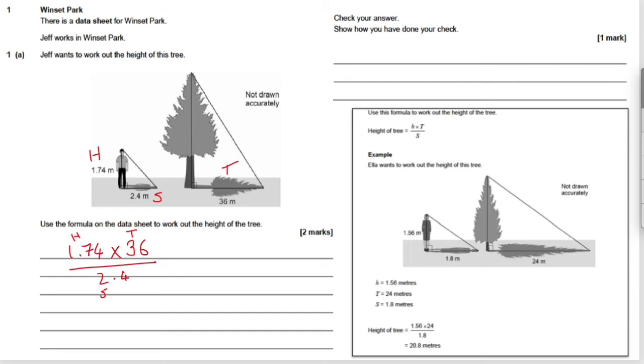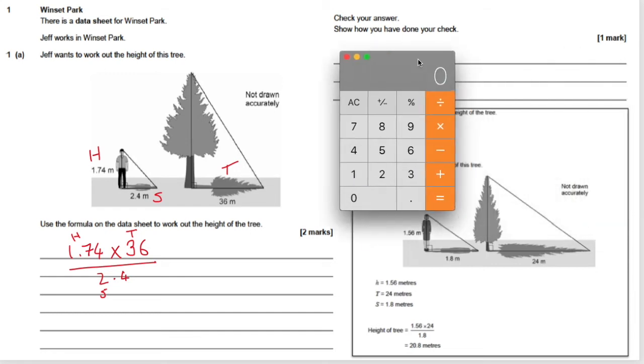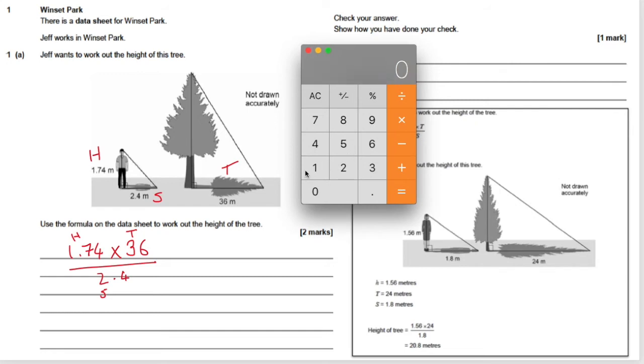So you'd need a calculator for this. So we have 1.74 times 36. That would equal 62.64. And then we divide this by 2.4. Which would equal 26.1.